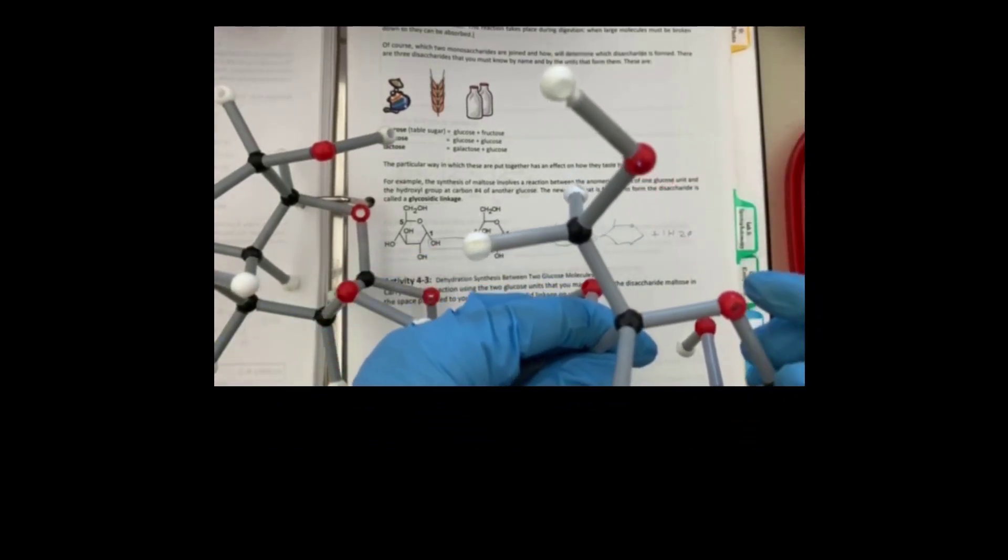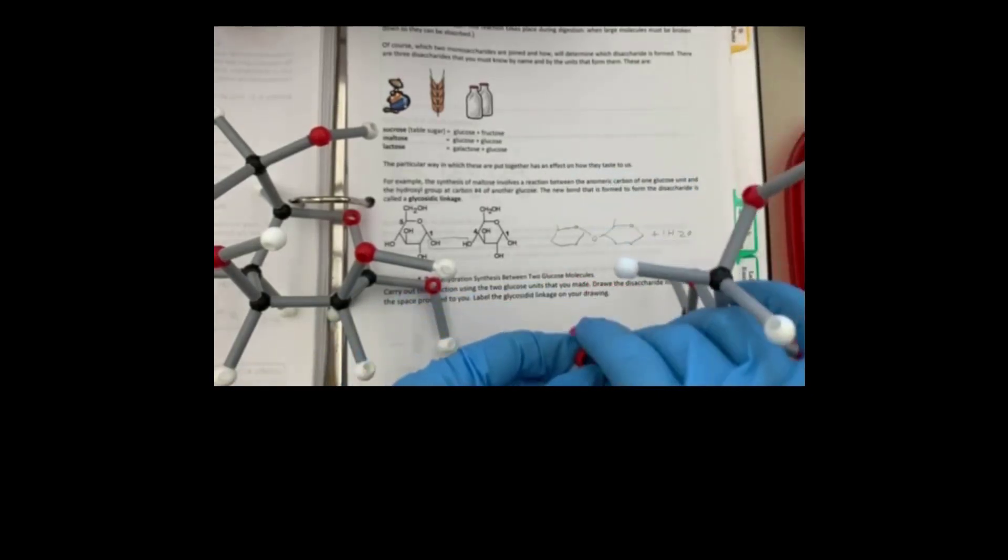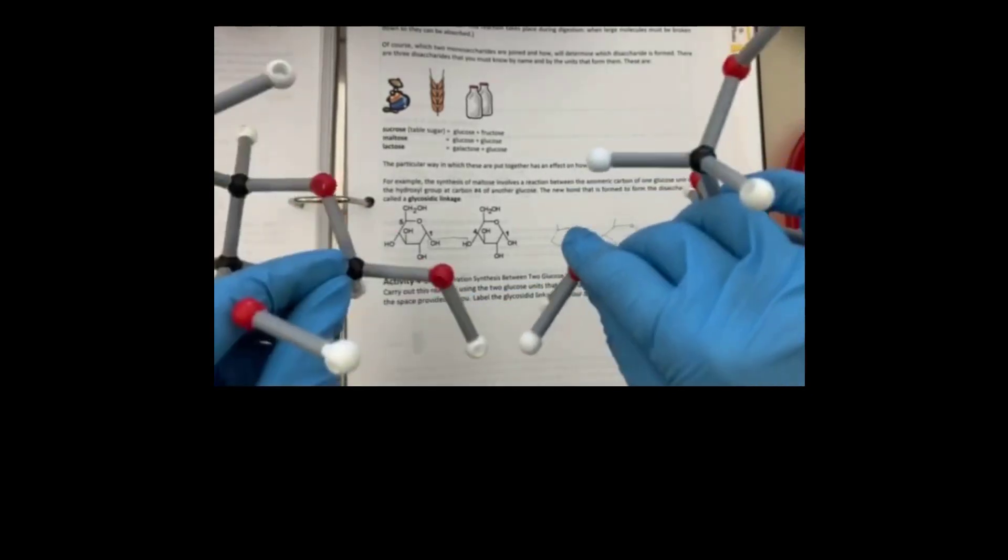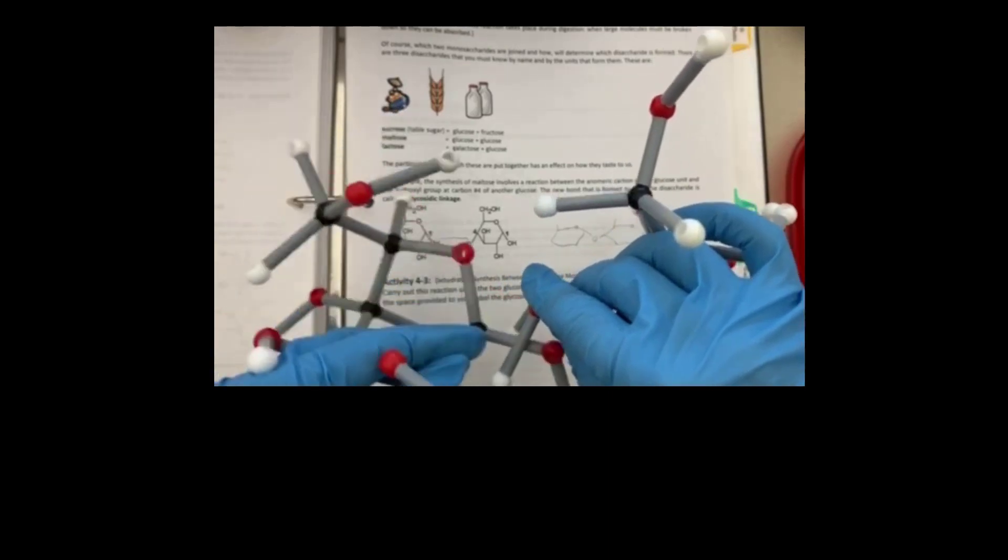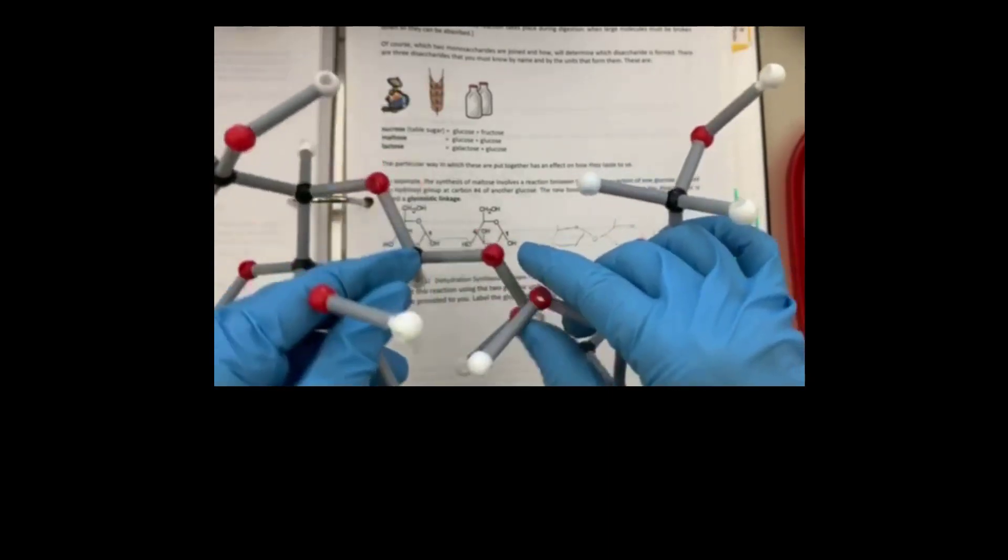In the second monosaccharide, I need to look for carbon number four. This is my second monosaccharide. If this is my carbon number one, I will count one, two, three, four. So I'm going to make the bond between these two monosaccharides. The general name is called monomer.